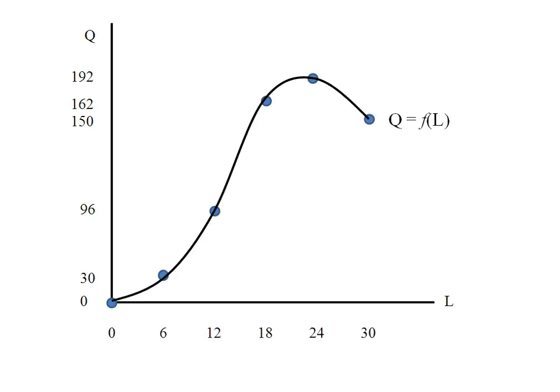So looking back now at our original graph let's see if we can identify the three different areas. Well down here we have our increasing marginal returns to labor so we've got an upward slope and it's also getting steeper.